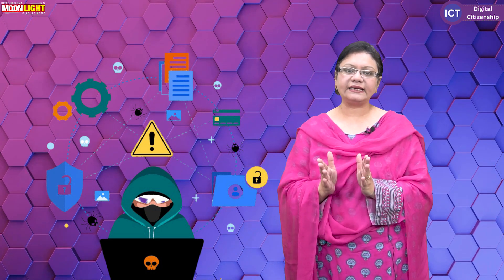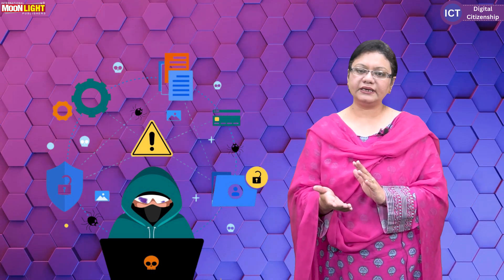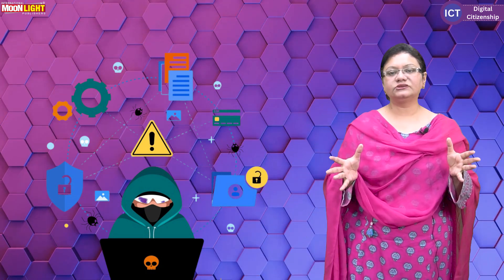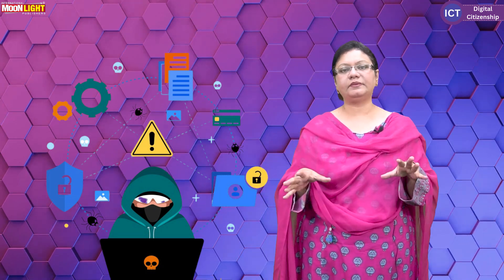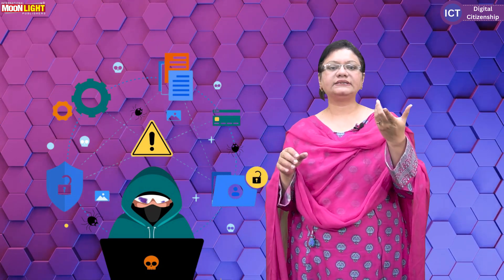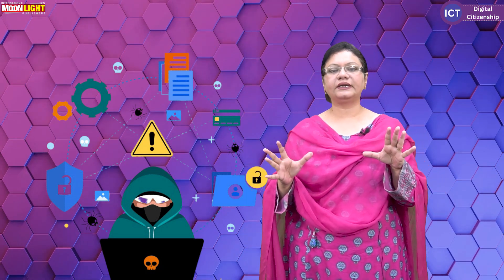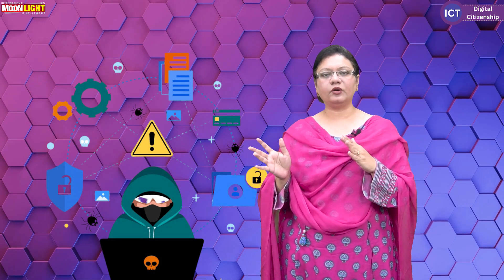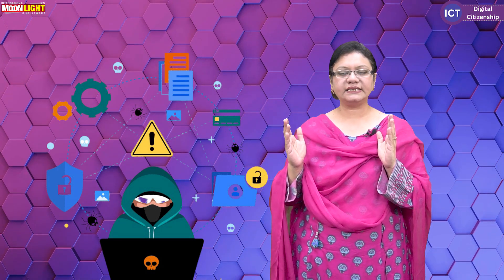Cyber crime can be committed by an individual person or by a group. These criminals use technical skills to destroy systems or cause harm. Examples of cybercrime include cyberbullying, phishing emails, malware, and identity theft — and these occur across the whole globe.